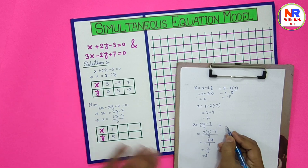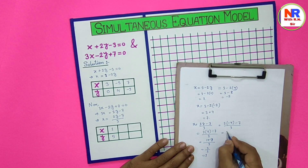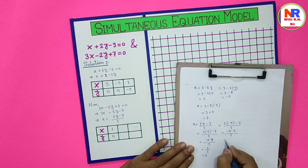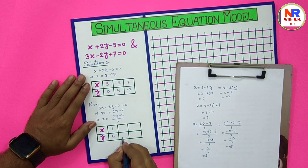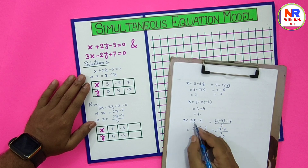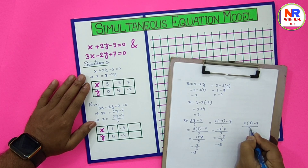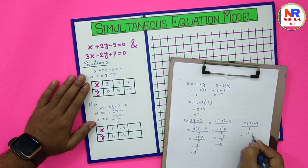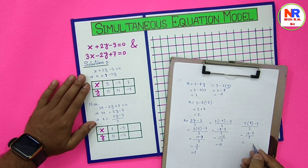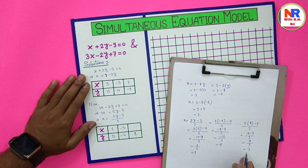Another value: suppose y equals minus 4. Then x equals 2 multiply minus 4 minus 7 divided by 3, that is minus 8 minus 7 divided by 3, which is minus 15 by 3, equal to minus 5. So for y equals minus 4, we get x equals minus 5. Another value: suppose y equals 8. Then x equals 2 multiply 8 minus 7 divided by 3, that is 16 minus 7 divided by 3, which is 9 by 3, equal to 3. So for y equals 8, we get x equals 3.